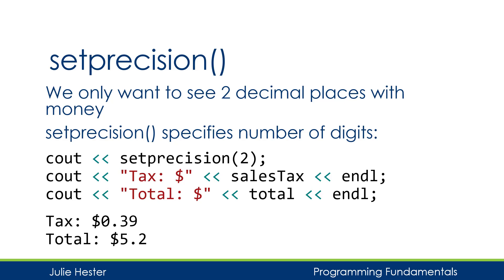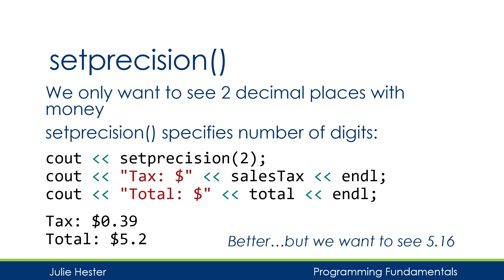This does look better. However, the total really should be $5.16, and if I went to my favorite fast food restaurant and they rounded my total up to $5.20 instead of $5.16, I probably wouldn't be too happy. So setprecision by itself is not quite enough. Both numbers are showing exactly two digits, but for sales tax all digits are to the right of the decimal, while the total has one digit to the left and one to the right — not quite what we want.